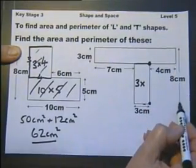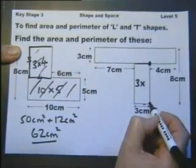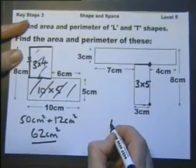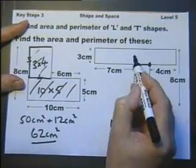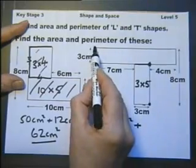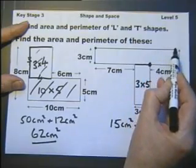Well the whole of that is 8. That is 3. So from there to there is 5. So that is the area of that part.